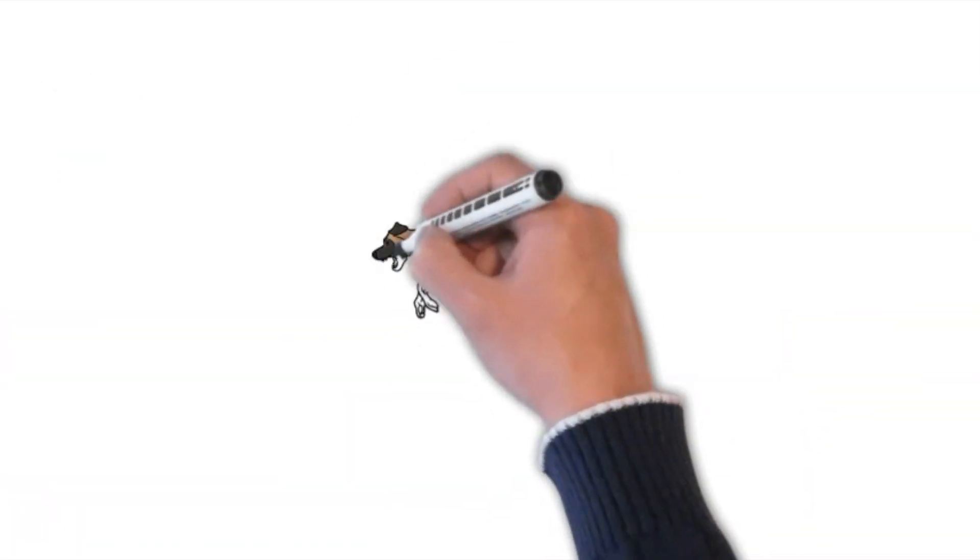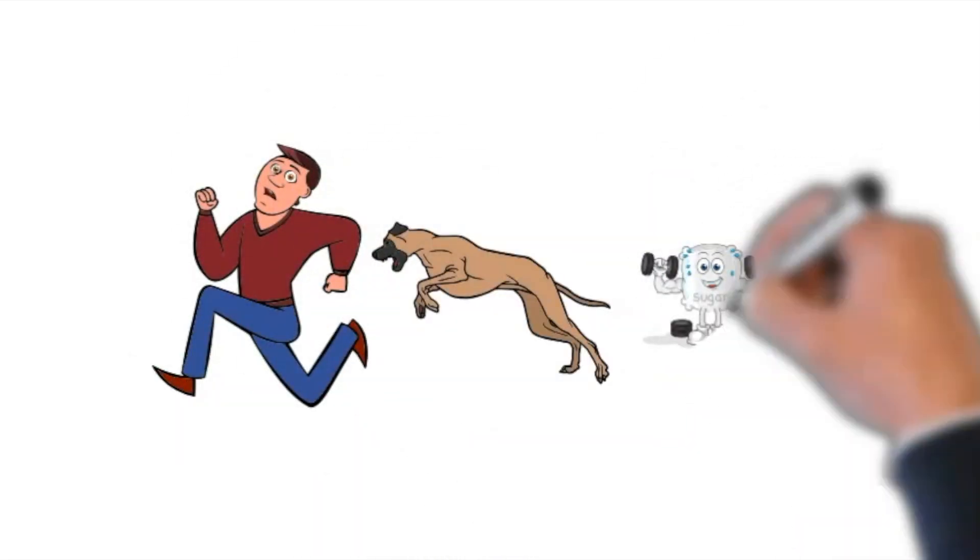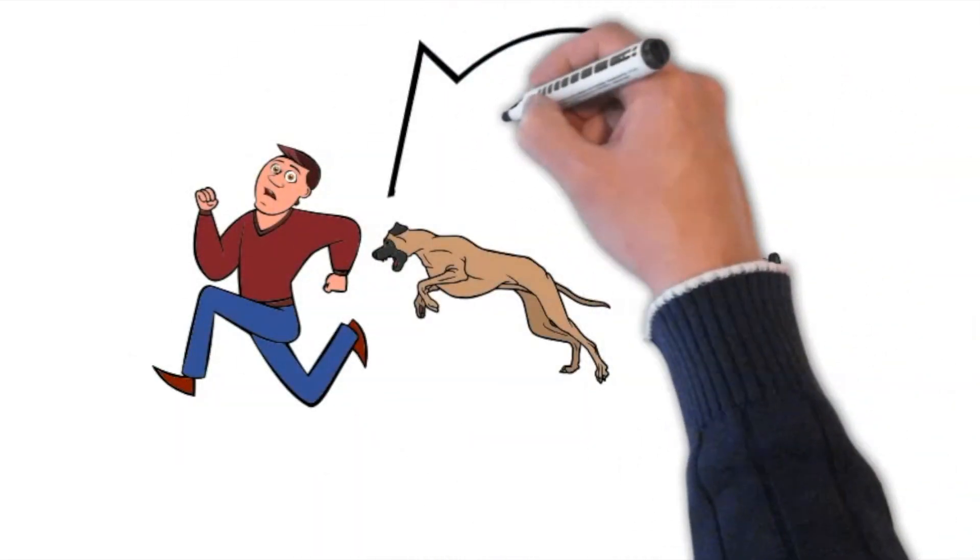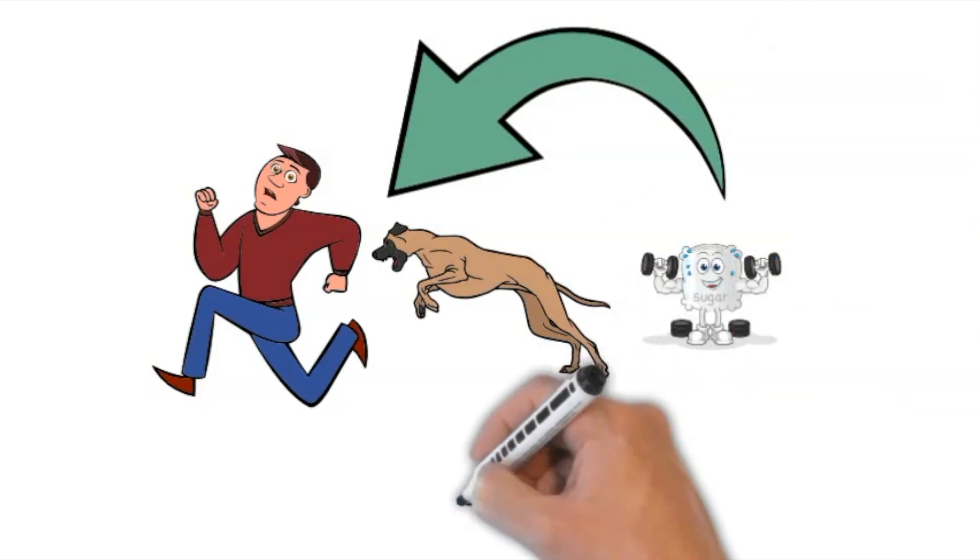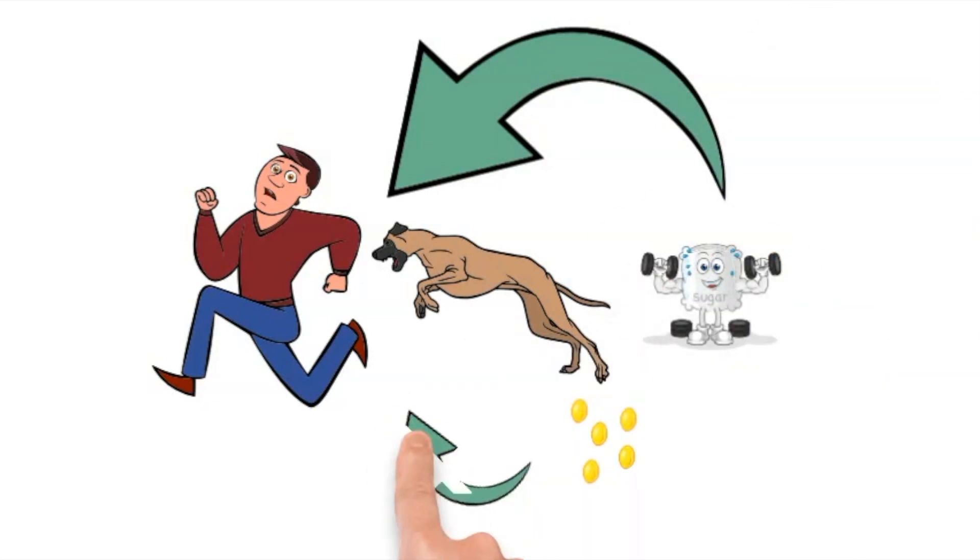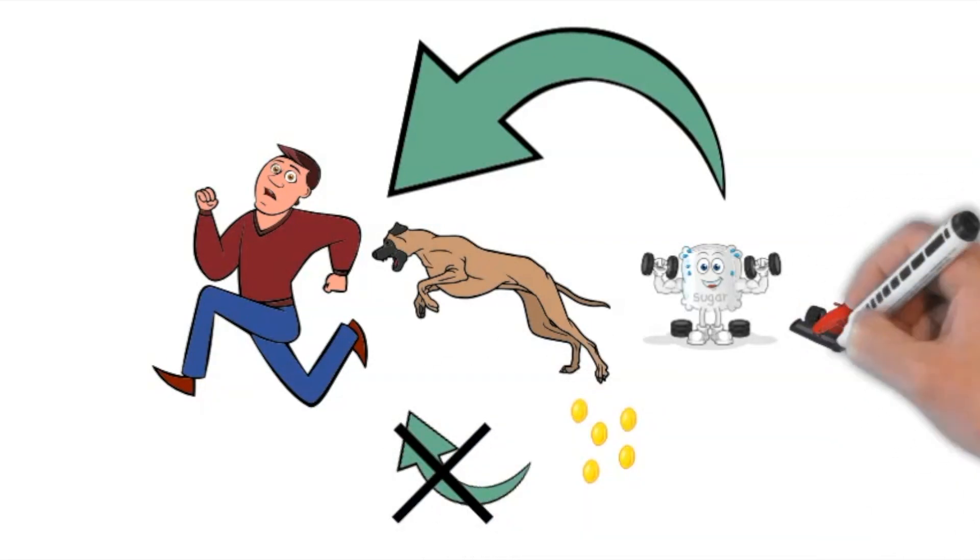On the other hand, in a fight-or-flight situation your body switches to a quicker source of energy. That's sugar. As a matter of fact, it shuts down fat metabolism and uses sugar as the only source of energy in those situations. Glucose is like a racing car, if you will.